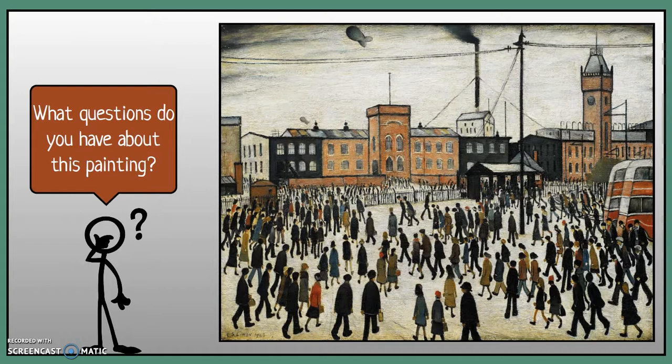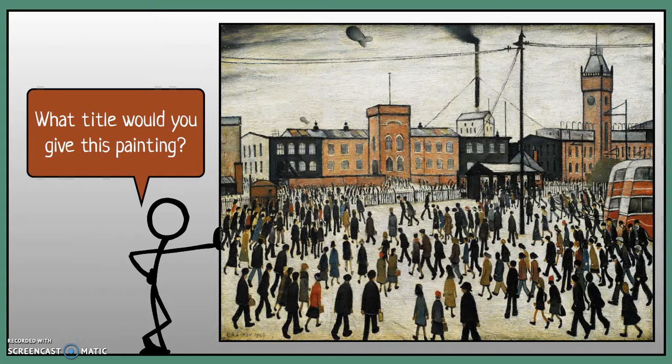Our third question is to think of the questions that you can have about this painting. What would you like to find out more about and why? Think of some questions you might ask when looking at this image to find out more about what the artist was attempting to do and the reasons why. And our final question: if you had created this picture or it had been given to you, what title would you give to this painting and why?